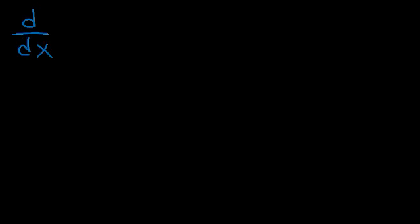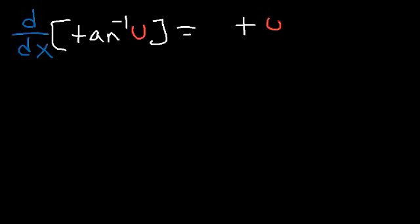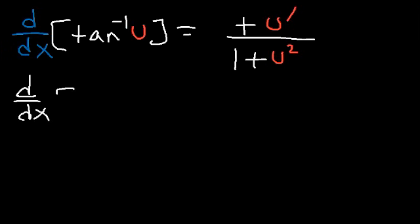The next formula you need is the derivative of the inverse tangent function, which equals positive u prime divided by 1 plus u squared. Using this formula, let's find the derivative of the inverse tangent of x divided by 2.